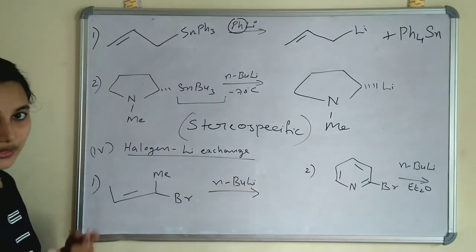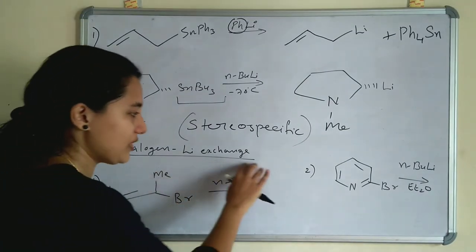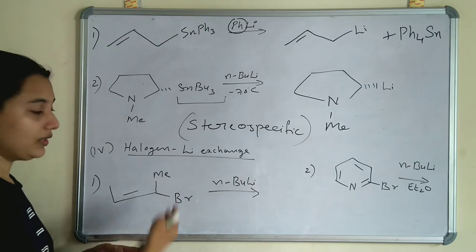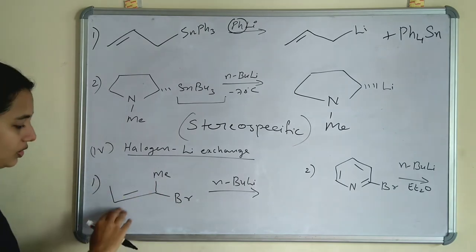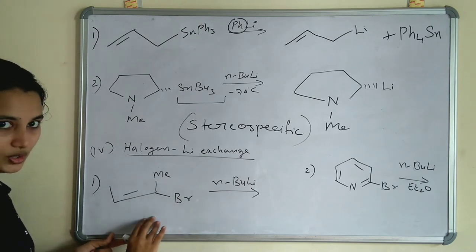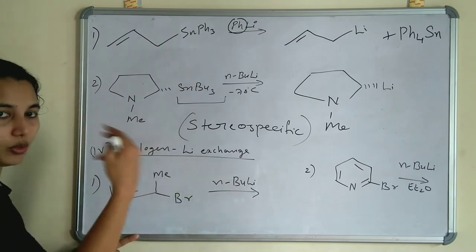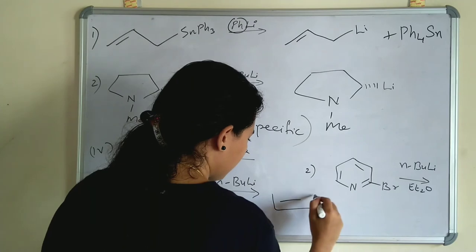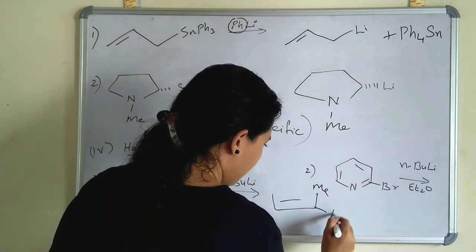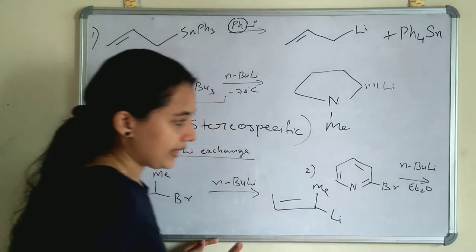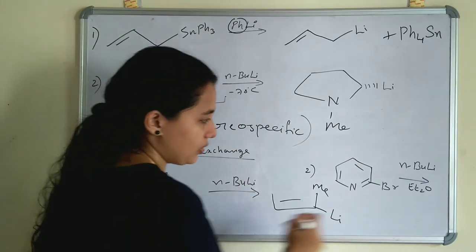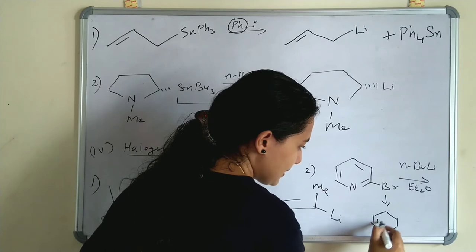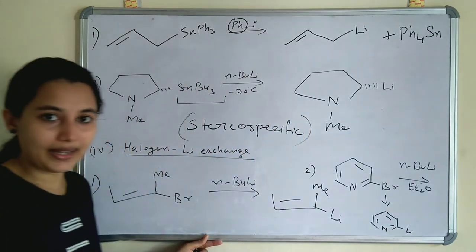The fourth important reaction is halogen-lithium exchange. Similar to metal exchange, lithium exchanges with a halogen instead of a metal. Here the halogen is bromine, attached to an alkene. When n-butyl lithium is added, bromine is replaced by lithium. In the second example, bromine is also replaced by lithium. This is a simple and important reaction — halogen-lithium exchange by Alkylithium.